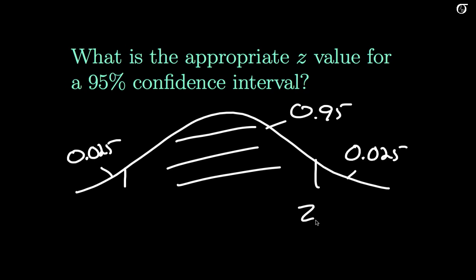And this value here is my z 0.025 and that's the z value that I want. Now I can't just go running off to a table now. It's really tempting, I know. You're running off to a table and you go, look at 0.95.